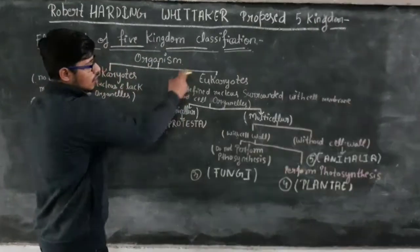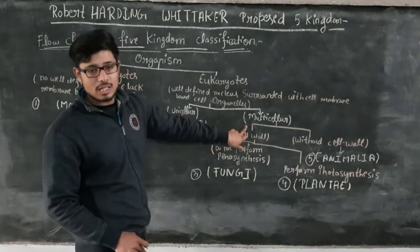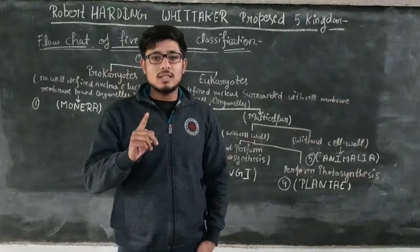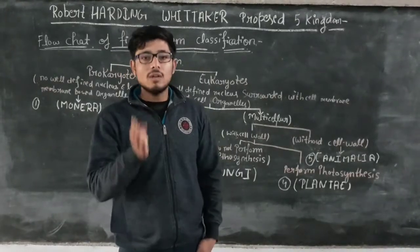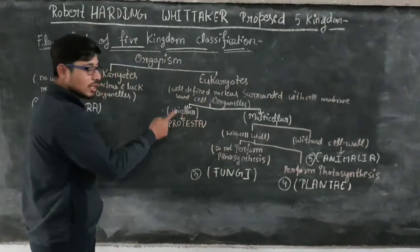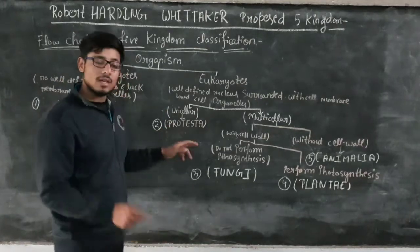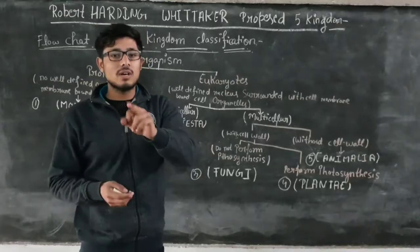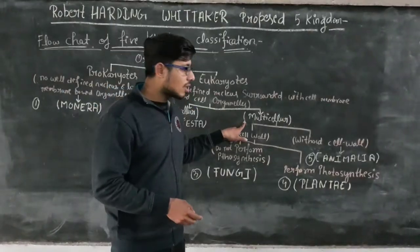This eukaryotic group is divided into two parts: unicellular organisms and multicellular organisms. Unicellular means single-celled organisms, and multicellular means organisms with more than one cell. Unicellular organisms include the kingdom Protista, as they are only single-celled.